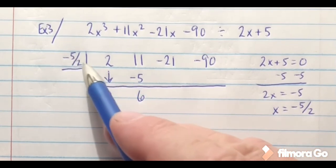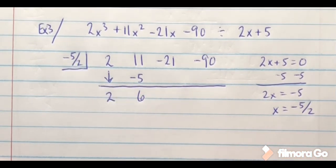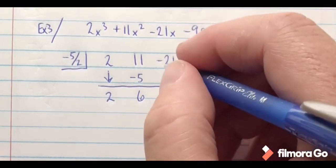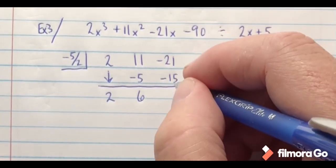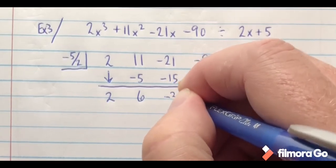Which gives me positive 6. If I multiply negative 5 halves times 6, that's going to give me negative 15, which when I add those together that's going to give me a negative 36.